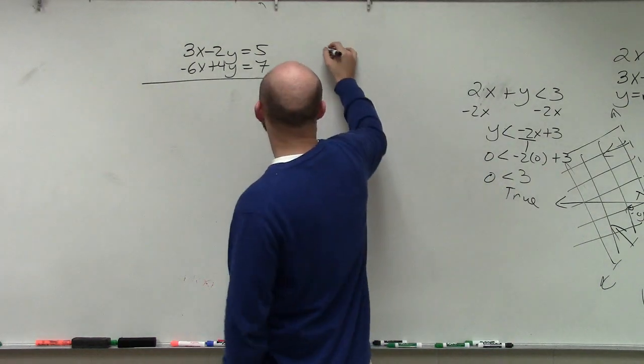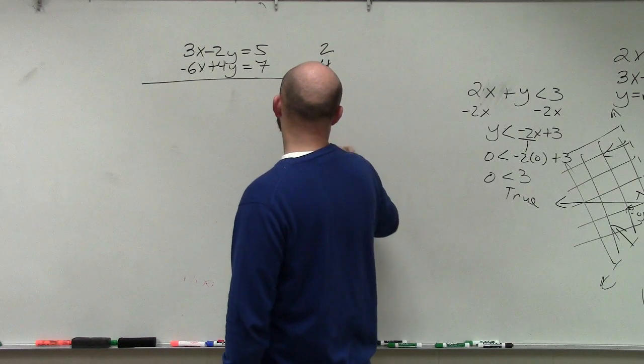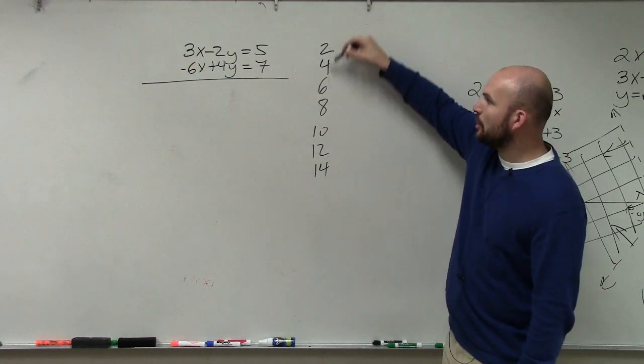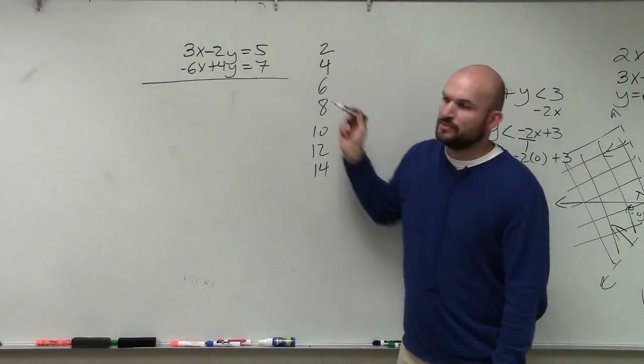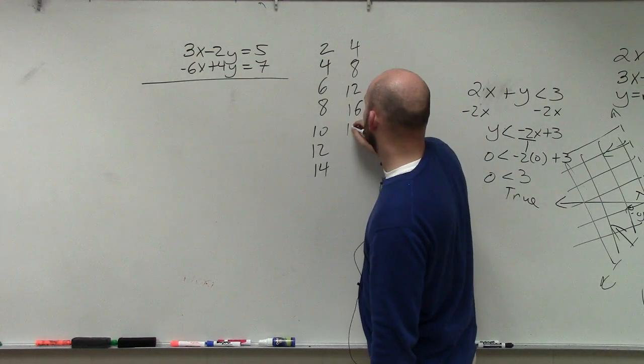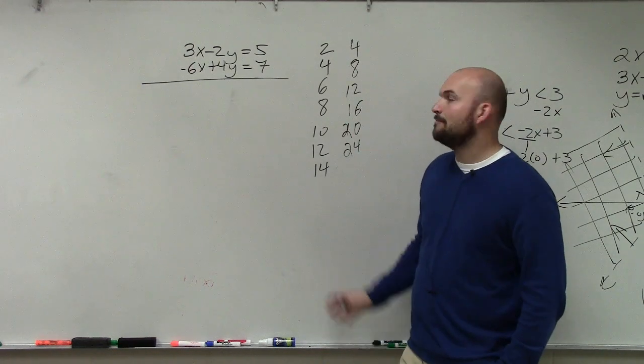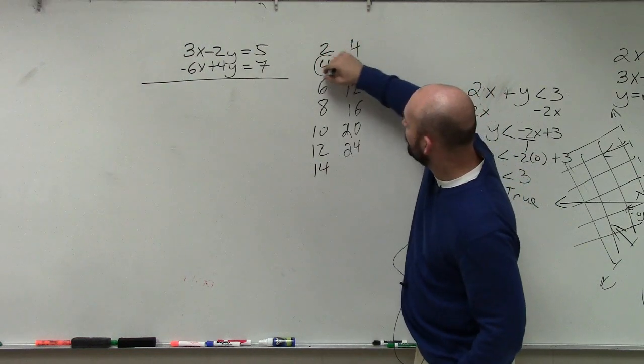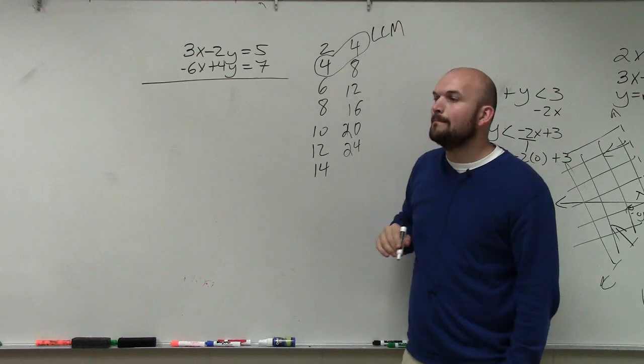2, 4, 6, 8, 10, 12, 14. These are what we call multiples of a number. These are all numbers that the number 2 divides into. Now let's write the multiples of 4: 4, 8, 12, 16, 20, 24. What is the smallest number that both of these share, that they divide into? 4. That is what we call our least common multiple.